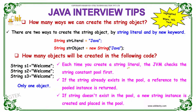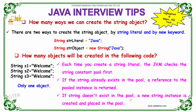Each time you create a string literal, the Java Virtual Machine checks the string constant pool first. If the string already exists in the pool, a reference to the pool instance is returned. If the string doesn't exist in the pool, a new string instance is created and placed in the pool.